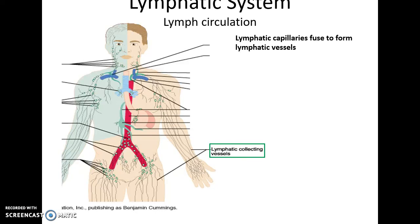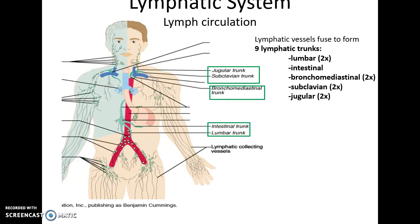The lymphatic capillaries will then fuse to form larger lymphatic vessels. There are many lymphatic vessels in the body. Lymphatic vessels will eventually fuse to form the nine lymphatic trunks, named after the general area where they are located: two lumbar trunks (right and left), an intestinal trunk, bronchomediastinal trunks (right and left), two subclavian trunks, and two jugular trunks.